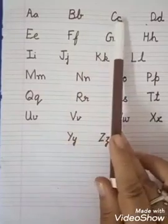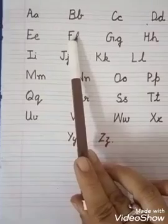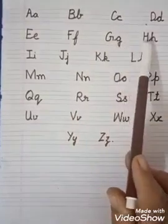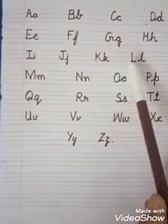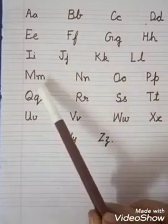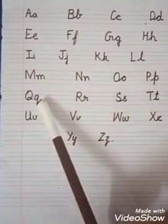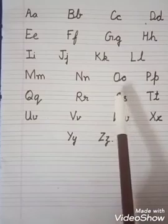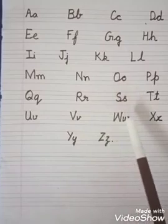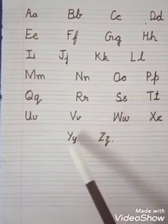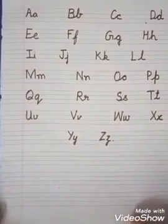A, B, C, D, E, F, G, H, I, J, K, L, M, N, O, P, Q, R, S, T, U, V, W, X, Y, Z. These are your English letters.